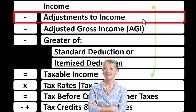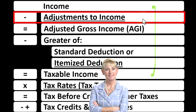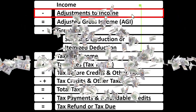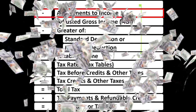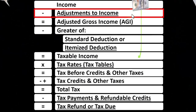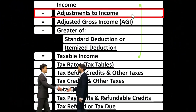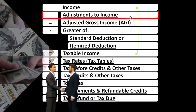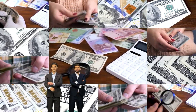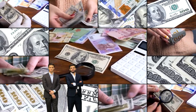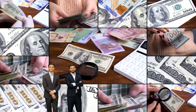You might also hear the adjustments to income called the above-the-line deductions, or you might hear them called Schedule 1 deductions. The name could change as time passes — we now have a Schedule 1 which we didn't have before — so they might be referred to as the Schedule 1 deductions. The point is, they're different from the itemized or standard deductions that are further down below.